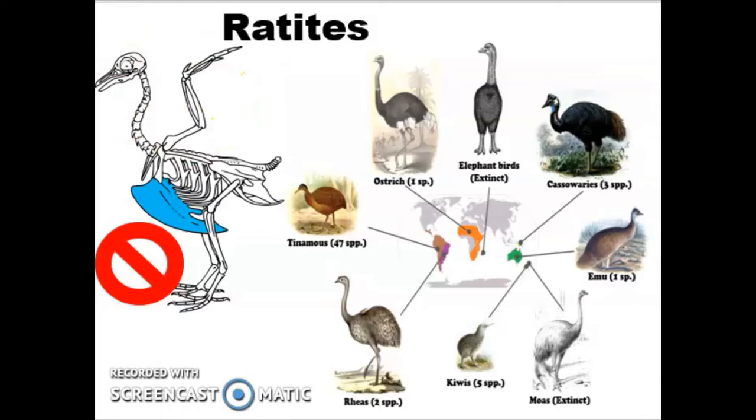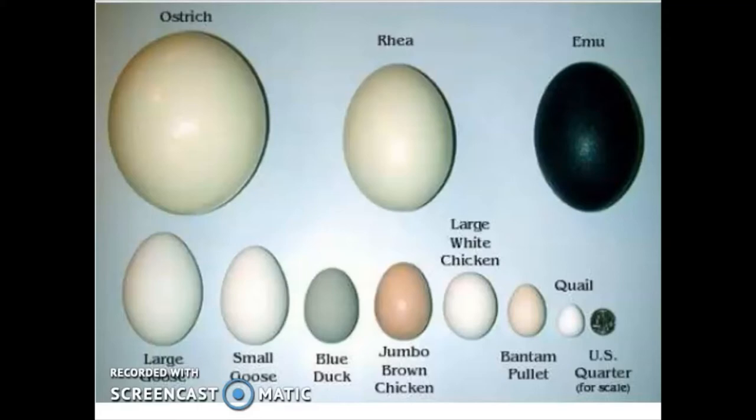One of the distinguishing features we're going to see about these different bird species and breeds is the type of egg that they lay — both the size of that egg and sometimes the shape. Geese eggs tend to be a little bit more oblong and pointed at the ends. The color of that egg is going to be another important distinguishing factor.